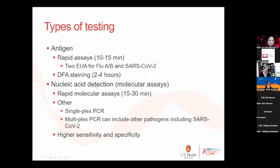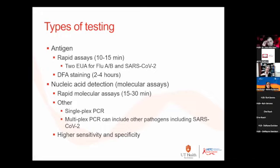The better tests are nucleic acid detection or molecular assays — some people call these PCRs, but they're not all actually PCRs. There are rapid ones that can get you results back in 15 to 30 minutes. There's single-plex PCR testing just for flu, but there's also multiplex PCR where you can test for rhinovirus, adenovirus, flu, and COVID together. These have higher sensitivity and specificity and are really the test of choice.